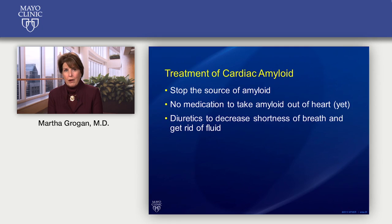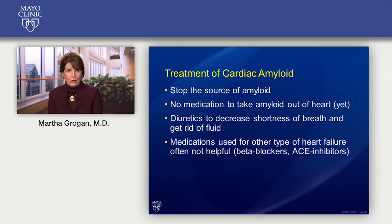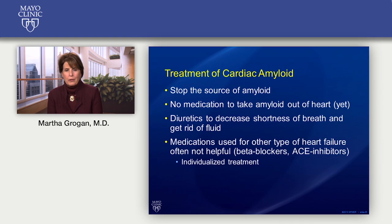Medications that are very common for other types of heart failure — particularly beta blockers and ACE inhibitors — often won't work as well or won't be well tolerated in cardiac amyloidosis. So sometimes we need to reduce those medications or use the lowest dose possible. The main thing to know is that medications that work for other kinds of heart failure don't necessarily work for this kind of heart failure, and you might have been put on those medications before your provider knew you had amyloidosis. The key is that treatment really needs to be individualized.